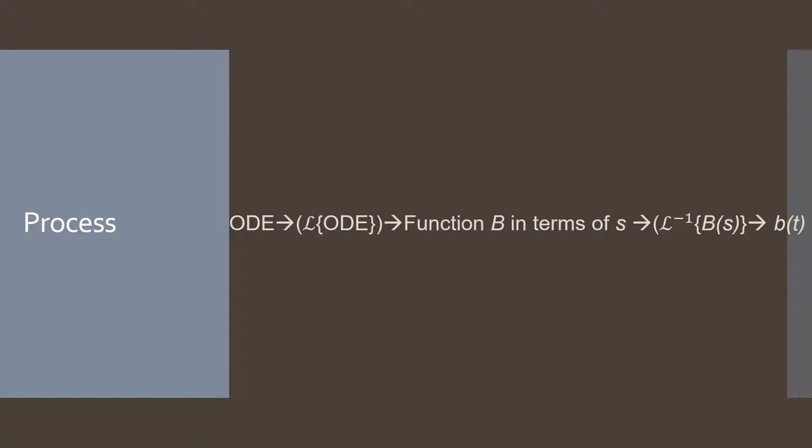The process we're going to use to solve is: take the Laplace transform of the ODE to get a function big B in terms of S, then manipulate it algebraically so that we can take the inverse Laplace transform of B(S) to get little b(t), which tells us the amount of the drug at any given time — which is our end goal.